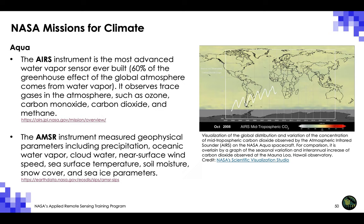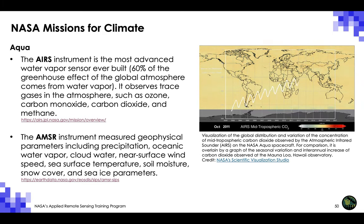The visualization on the right shows the global distribution and variation of the concentration of mid-tropospheric carbon dioxide observed by AIRS, overlaid by a graph of the seasonal variation and inter-annual increase of carbon dioxide observed at the Mauna Loa Observatory.